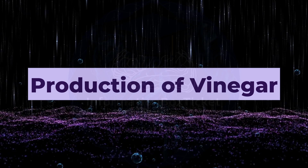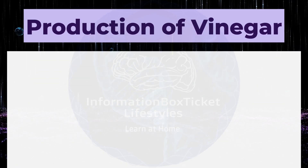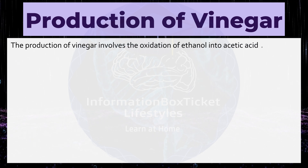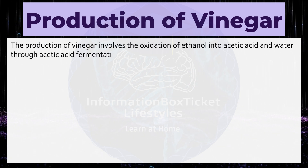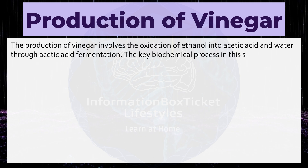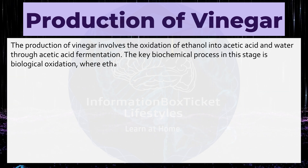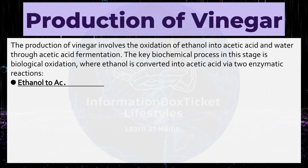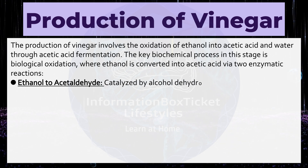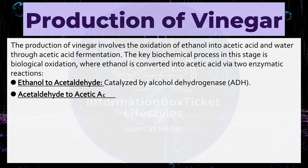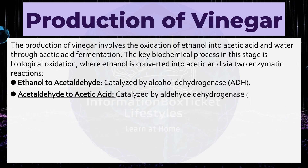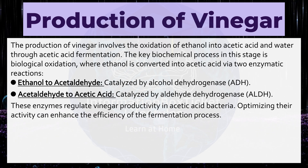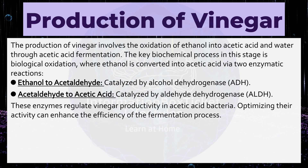Production of vinegar. The production of vinegar involves the oxidation of ethanol into acetic acid and water through acetic acid fermentation. The key biochemical process in this stage is biological oxidation, where ethanol is converted into acetic acid via two enzymatic reactions: ethanol to acetaldehyde, catalyzed by alcohol dehydrogenase, and acetaldehyde to acetic acid, catalyzed by aldehyde dehydrogenase. These enzymes regulate vinegar productivity in acetic acid bacteria, and optimizing their activity can enhance the efficiency of the fermentation process.